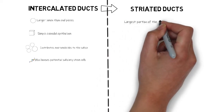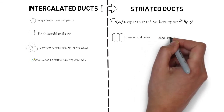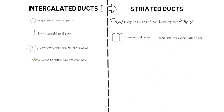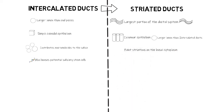The striated duct constitutes the largest portion of the ductal system within the lobule of the salivary gland. The ductal cells of the striated duct are columnar in shape, and their lumen is larger than that of the intercalated duct. Under the microscope, their cytoplasm — typically the basal side — exhibits faint striations, hence the name striated duct.